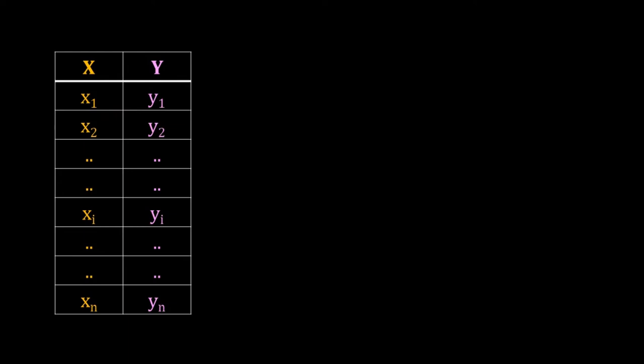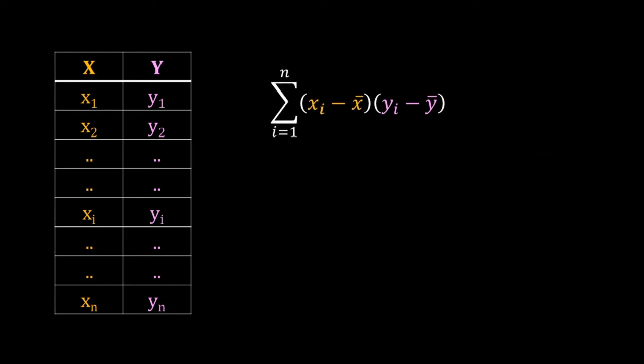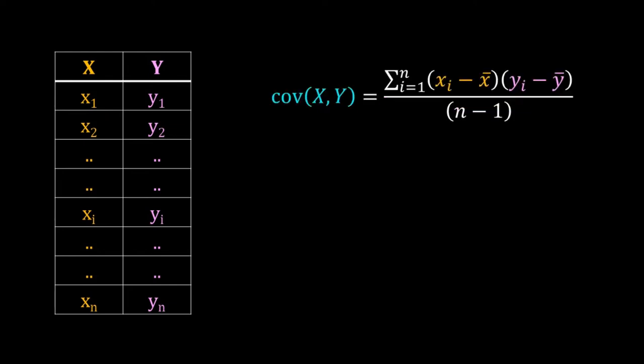Suppose we have pairwise data for X and Y, where when X is x_i, Y is y_i. To get the covariance we multiply (x_i minus mean of X) with (y_i minus mean of Y), do that for all i from 1 to n, sum those, and divide by n minus 1. We are essentially averaging, but to get an unbiased estimate we use n minus 1 in place of n.